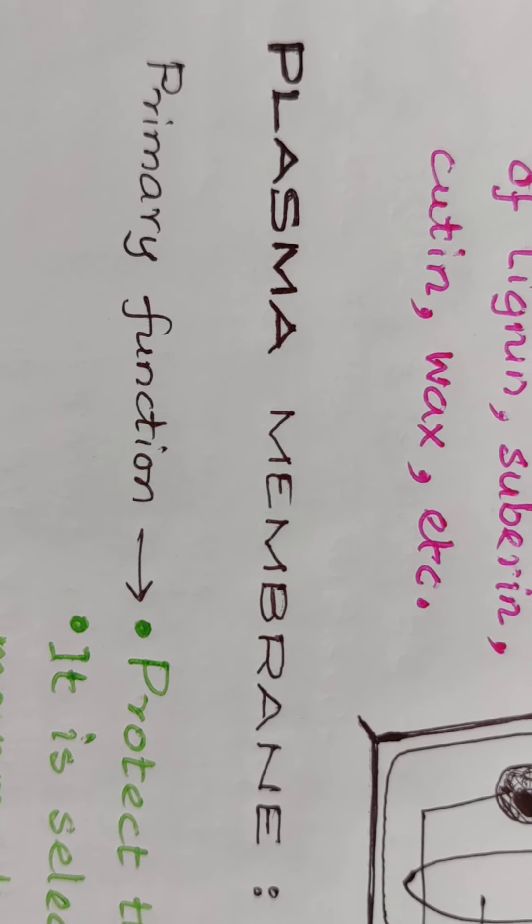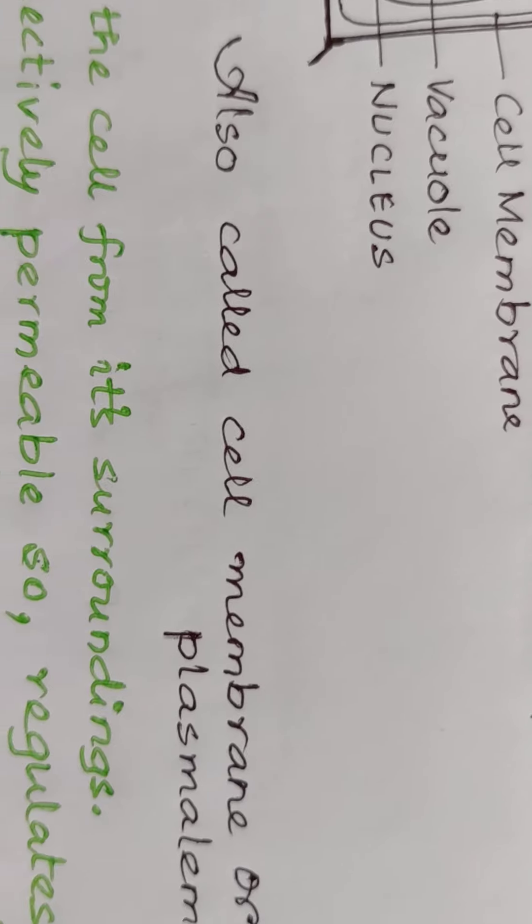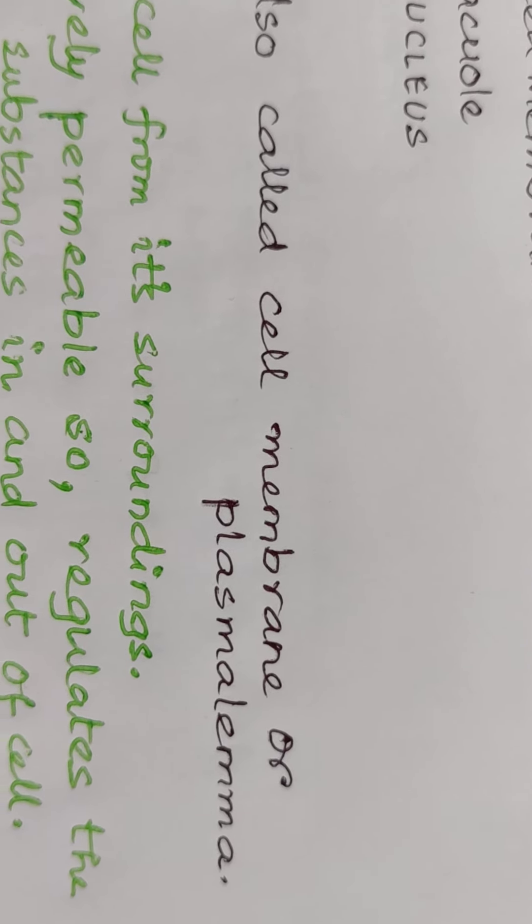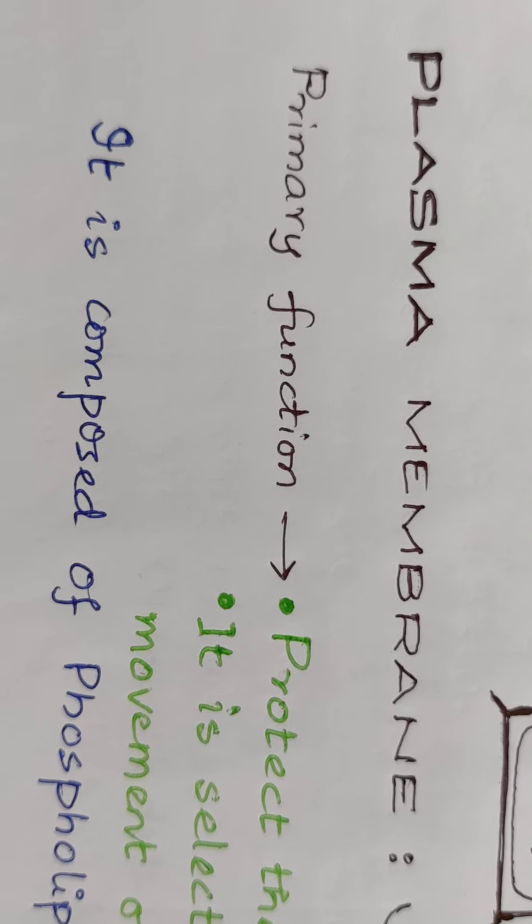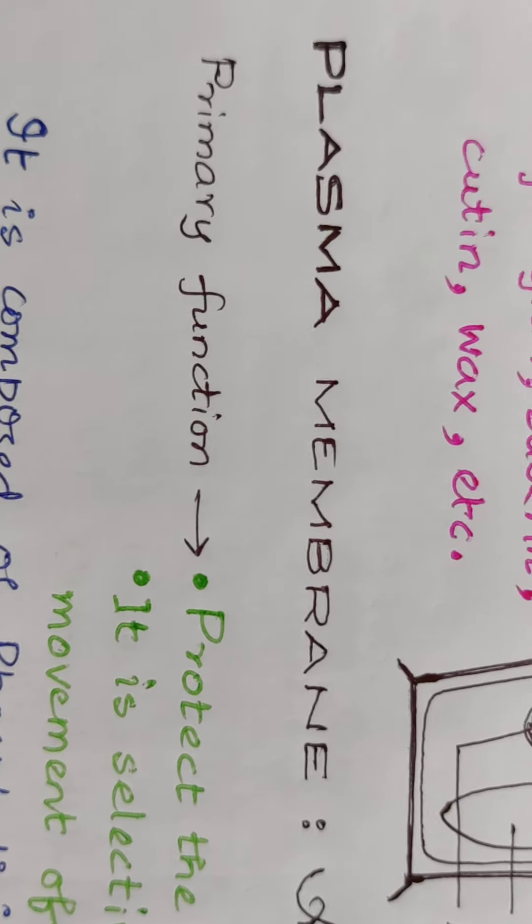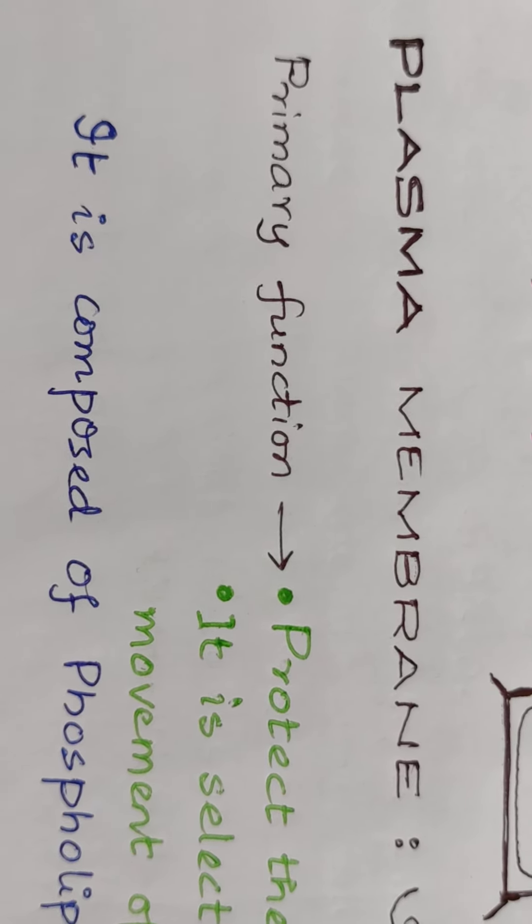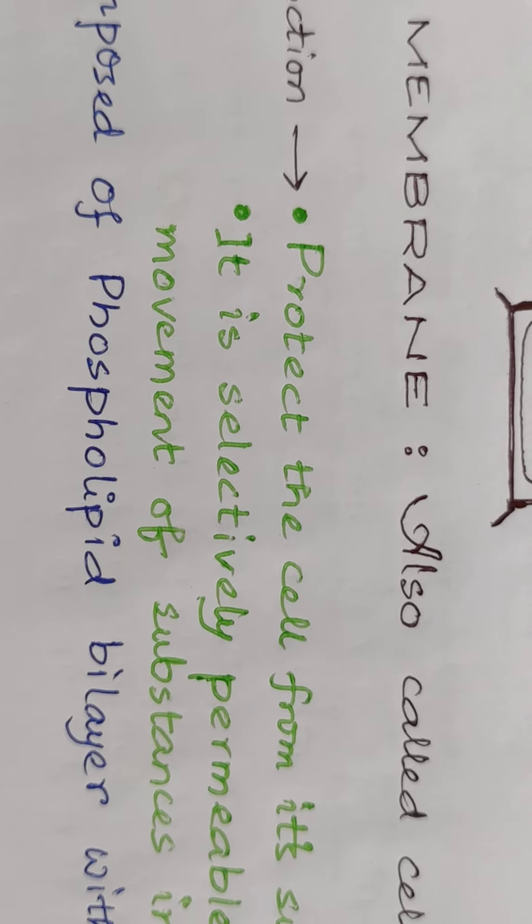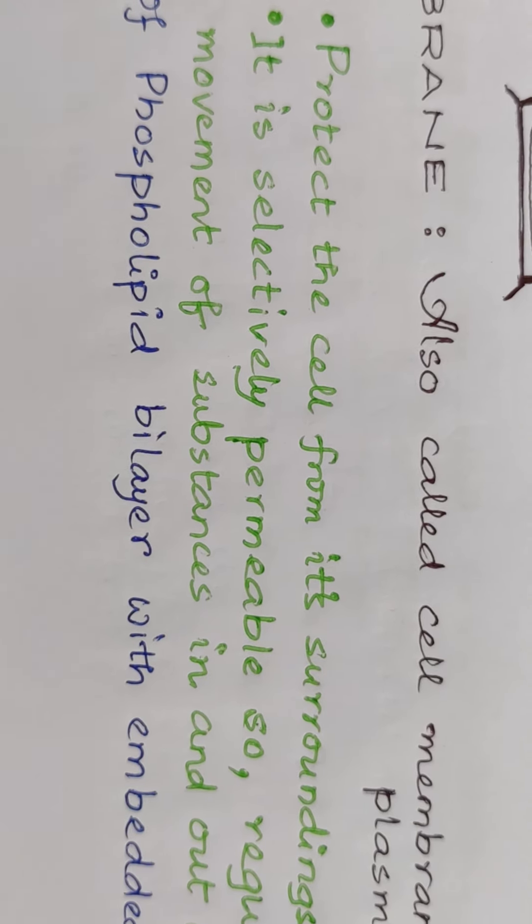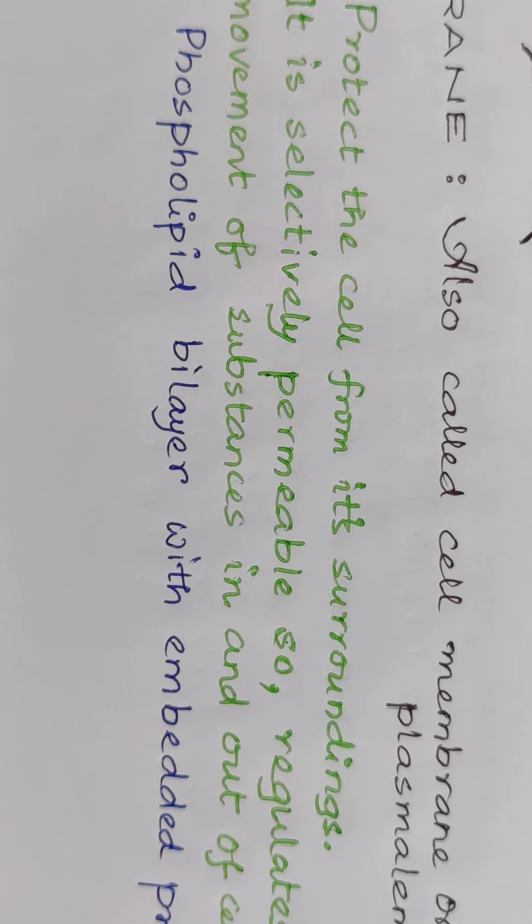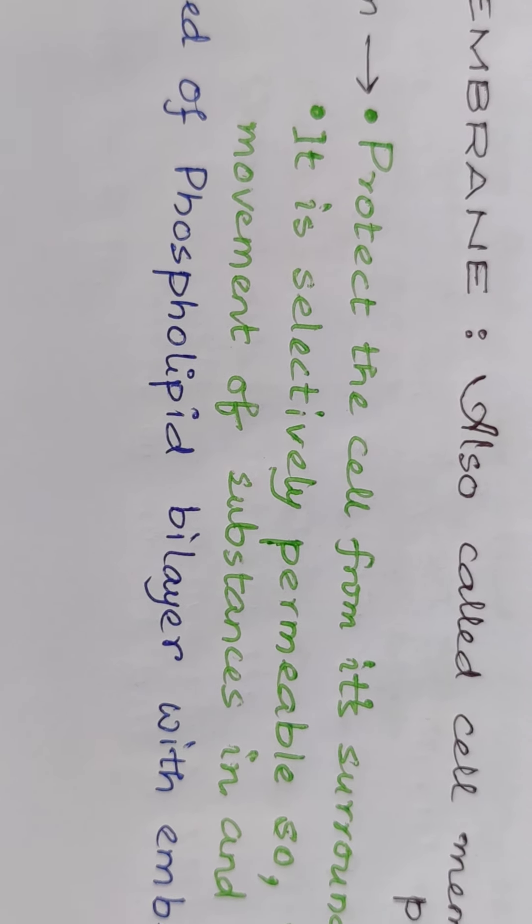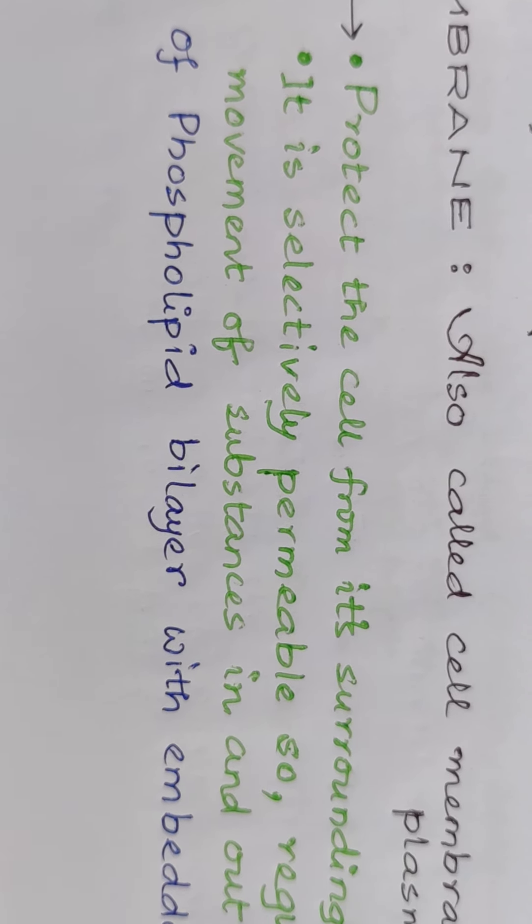The next part of the cell is called cell membrane, or plasma membrane, or plasma lemma. The primary functions of plasma lemma are the following: number one is protection of the cell from its surroundings, number two it is selectively permeable.